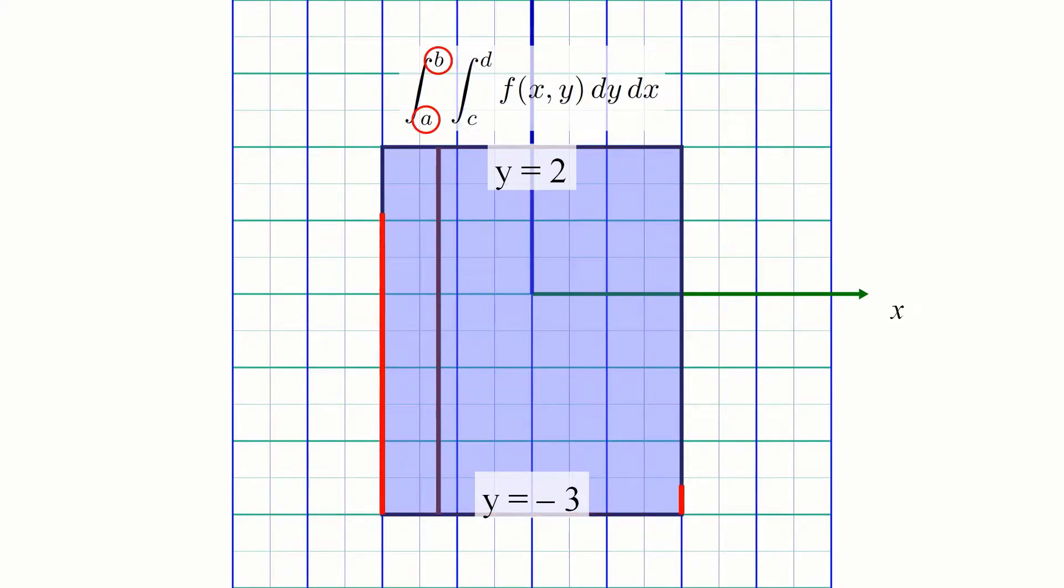After this, the bounds of the outer x-integral indicate the portion of the x-axis that the slice should be swept between to carve out the solid. In this case, the y-slice should be swept along the x-direction starting from x equals negative 2 and ending at x equals positive 2.